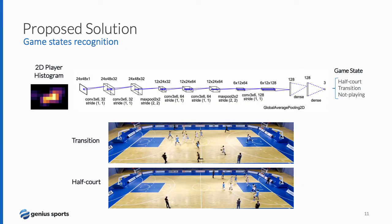The fourth component of our system is game state recognition. We define three states: half-court, transition, and not-playing. These states will guide the final production. We use the player distribution to compute a two-dimensional player histogram that is discretized into 24 by 48 and fed to a neural network composed of convolutional layers and two final fully connected layers. You can see two examples of states: a transition and a half-court.